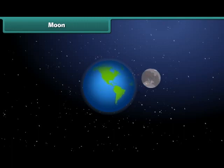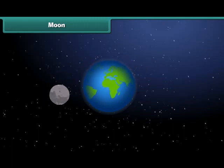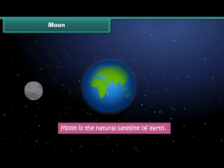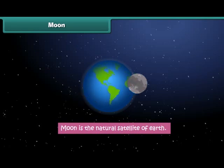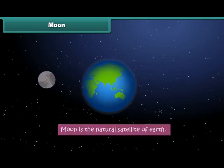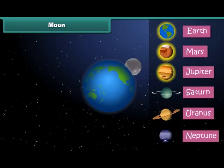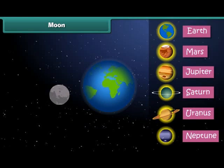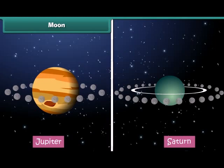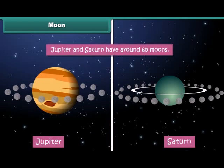Moon: A natural satellite is a celestial object that revolves around a planet. It is natural and not man-made. Moon is the natural satellite of Earth. Apart from Earth, Mars, Jupiter, Saturn, Uranus, and Neptune are other planets that have moons. While Earth has only one moon, all other planets have more than one — Jupiter and Saturn have around 60 moons.